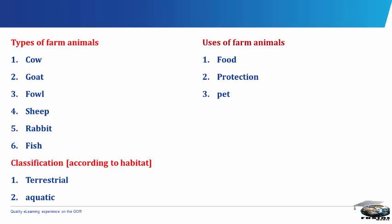Dairy products. Mammals can be used as a source of milk which can in turn be processed into other dairy products such as yogurt, cheese, butter, ice cream and so on. Using livestock for this purpose can often yield several times the food energy of slaughtering the animal outright.